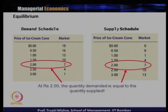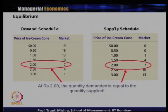If we look at the demand schedule and supply schedule together — in the demand schedule, price and quantity are negatively related; in the supply schedule, price and quantity are positively related. At rupees 2, the total market supply equals the total market demand. At rupees 2, the total market demand is 7 units and the total market supply is also 7 units. So rupees 2 is the equilibrium price and 7 units is the equilibrium quantity.